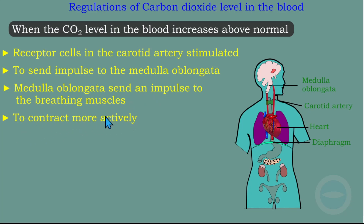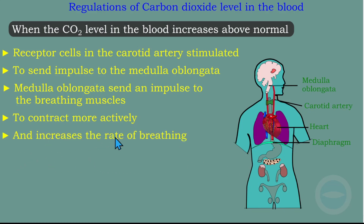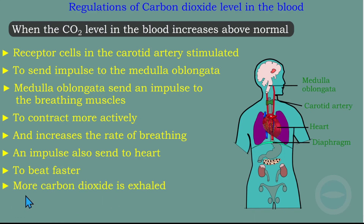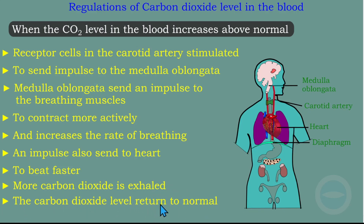When we talk about breathing muscles, we talk about the diaphragm and the intercostal muscles. The intercostal muscles are found between the ribs. They contract more actively, increasing the rate of breathing. Another impulse is also sent to the heart so that the heart beats faster. When the heart beats faster, there is an increase in blood flow. As blood flow increases, more carbon dioxide is exhaled and removed. Then the carbon dioxide level returns to normal.